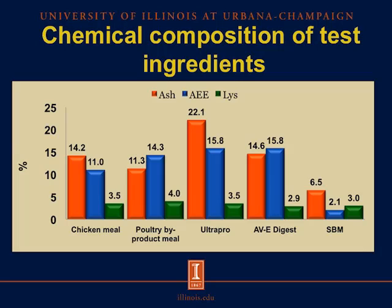In this slide, we can see the concentration of ash, acid hydrolysis ether extract, and lysine. The concentration of ash is relatively high in the animal protein sources compared with soybean meal. Acid hydrolysis ether extract is also higher in the animal protein sources — chicken meal, poultry by-product meal, ultra-pro, and ABE digest — compared with soybean meal, which is 2.1%. And in the case of lysine, it is relatively similar across all test ingredients.